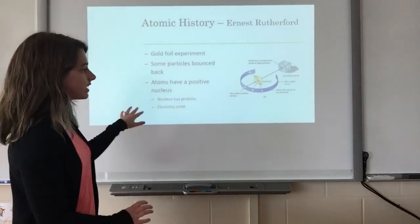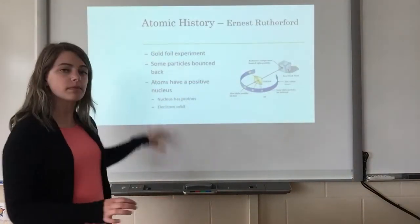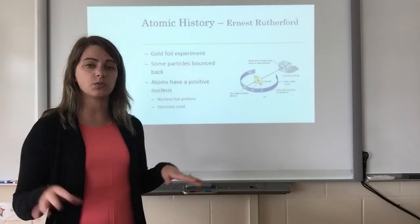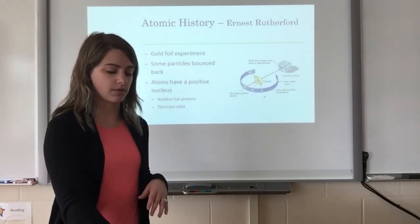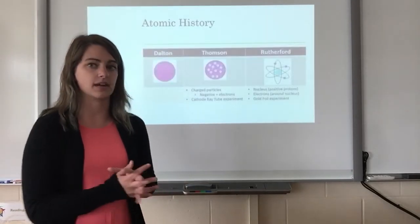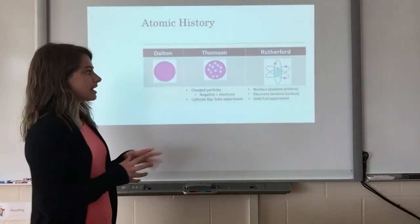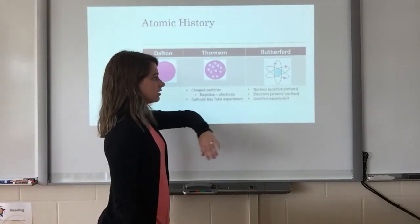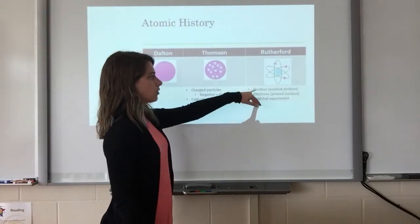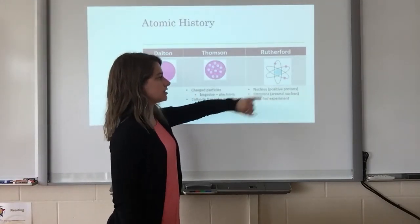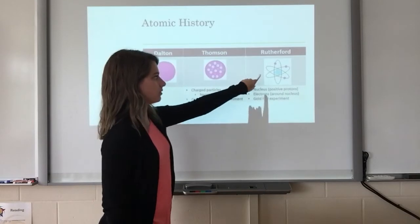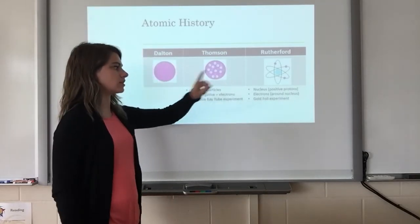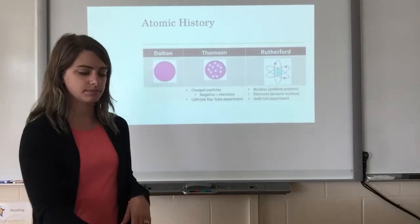The electrons, Rutherford said, just orbited around the outside — randomly arranged but randomly orbiting around the outside of the atom. This is probably the model of the atom you are most familiar with: the nucleus in the middle with all the positive charge, and the electrons orbiting around the outside.